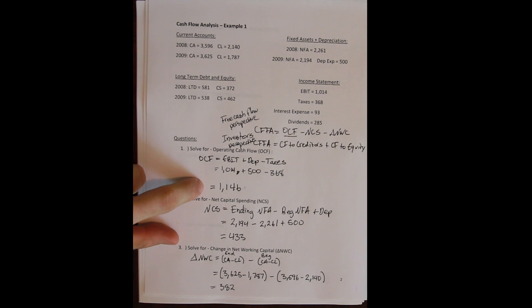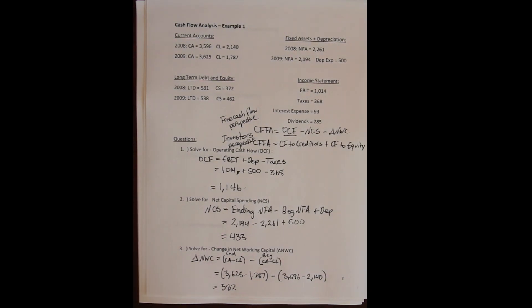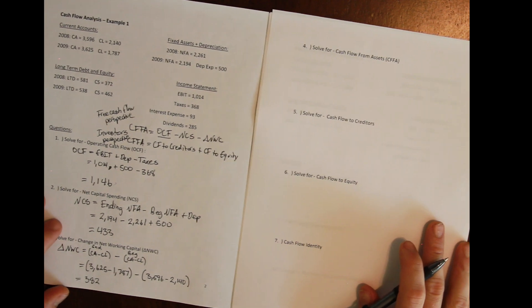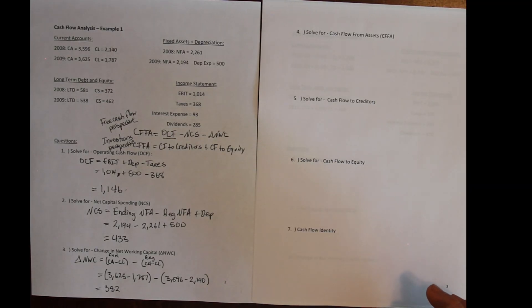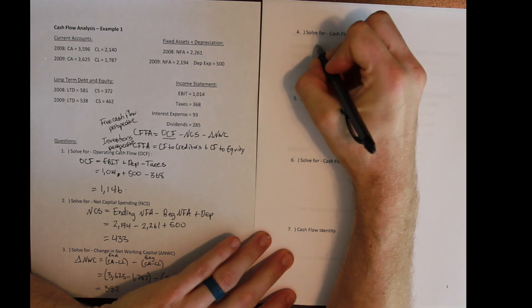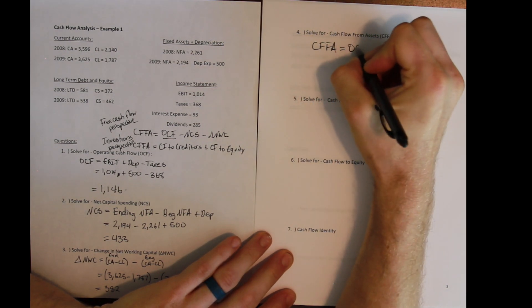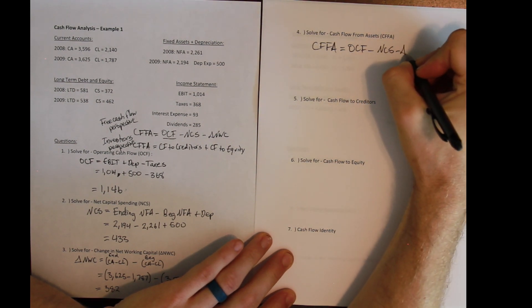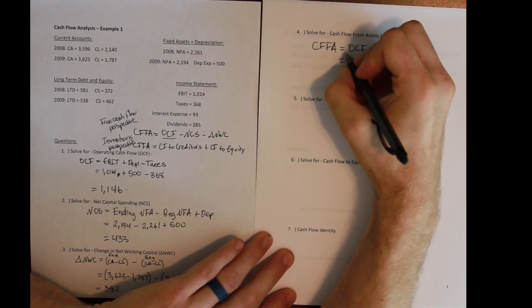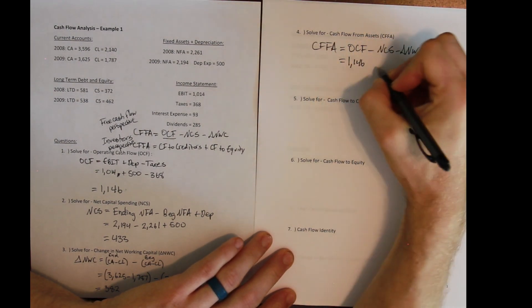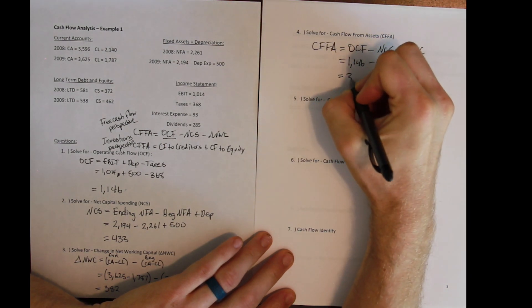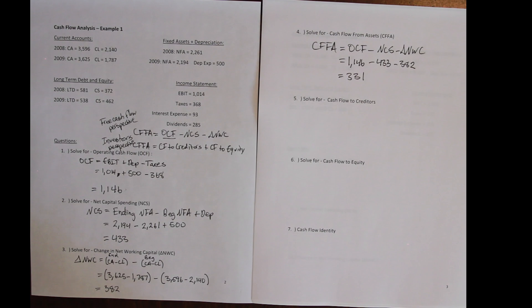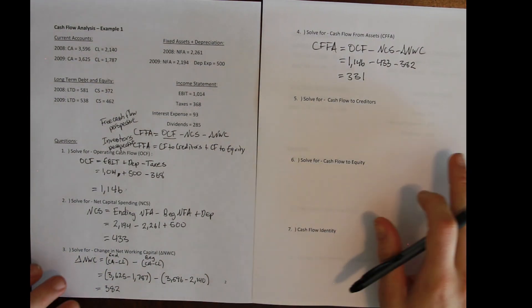This is the money generated from running the business. After making investments in fixed assets and current assets, there's cash left over. Cash flow from assets equals operating cash flow of 1,146 minus net capital spending of 433 minus the change in net working capital of 382, leaving 331.